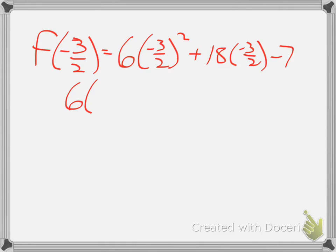When I work this out, this becomes 6 times positive 9 fourths, after I square negative 3 halves, plus, or I should say minus, since this would be positive 18 times negative 3 halves, that will reduce to 27, minus 7.